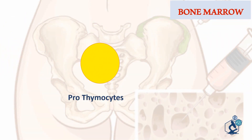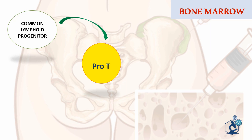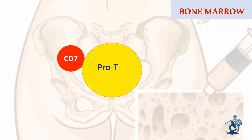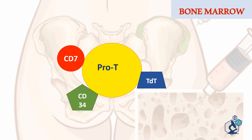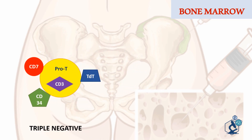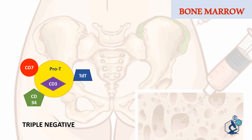Let's begin with the first stage of T cell development: pro thymocytes, also known as pro T cells. They are the first cells which commit to develop into T cells from common lymphoid progenitor cells in the marrow. They are positive for CD7, CD34, TDT, and cytoplasmic CD3, and are characterized by a germline configuration of the TCR beta chain.